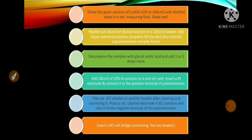Glacial acetic acid increases the solubility of copper sulphate in the solution. Then add 20 cm³ of 10% KI solution and stir. Insert a platinum electrode and connect it to the positive terminal of the potentiometer. Take saturated KCl solution in another beaker. After cleaning and rinsing it, place a saturated calomel electrode in the KCl solution and connect it to the negative terminal of the potentiometer.